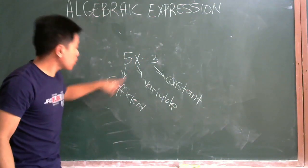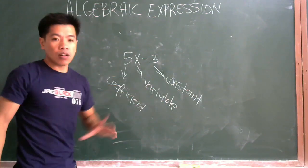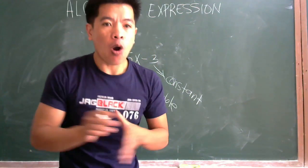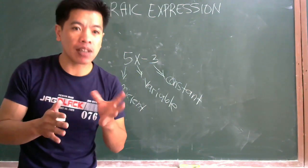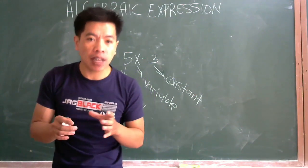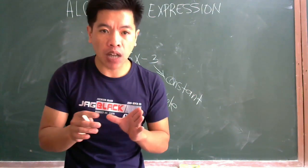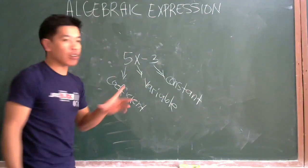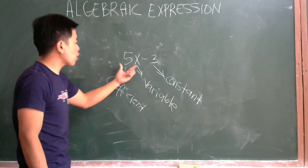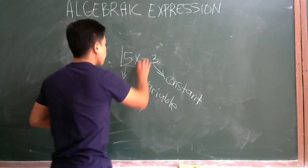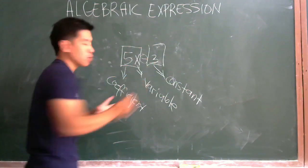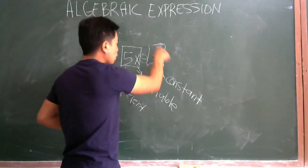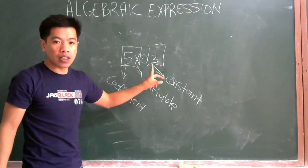So: coefficient, X as variable, 3 as constant. Now, what is a term? In algebraic expressions, a term is either a single number or variable, or numbers and variables multiplied together. Terms are separated by addition or subtraction only, or by positive or negative signs only. For example, in 5X minus 3, how many terms do you see? We have 5X as the first term and 3 as the second term, separated by subtraction.